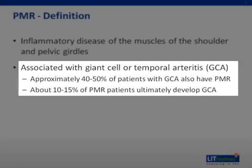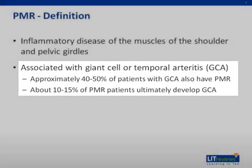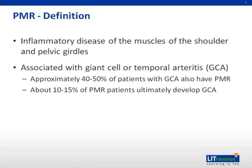Approximately 40% to 50% of patients with giant cell arteritis also have PMR. In addition, about 10% to 15% of patients diagnosed with PMR will ultimately develop GCA. Giant cell arteritis will be discussed in a separate lecture.